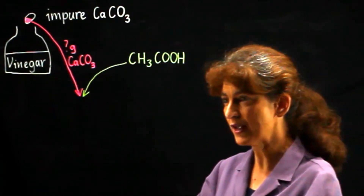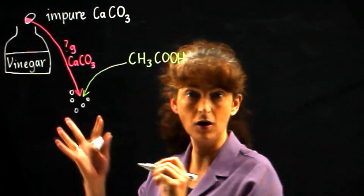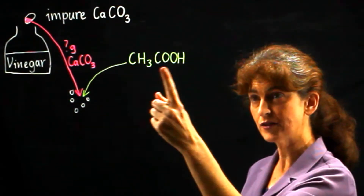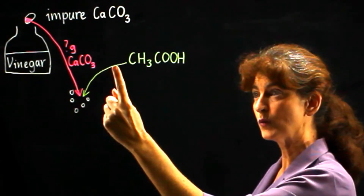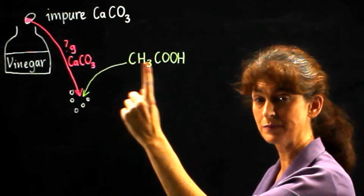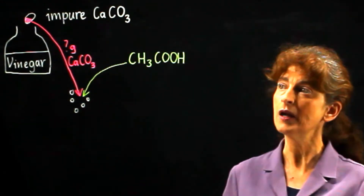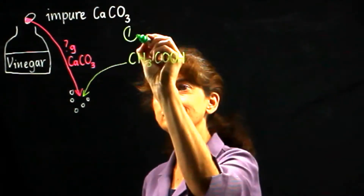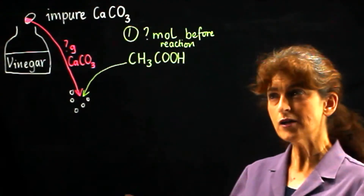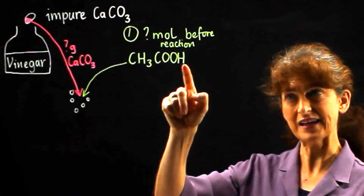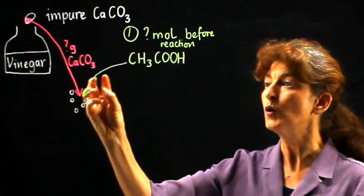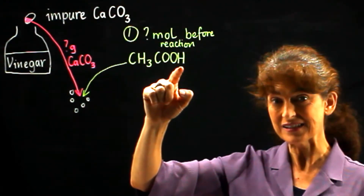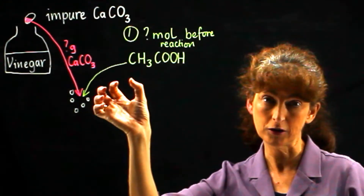So these two are going to react. We get bubbles, fizz — that's carbon dioxide coming up. If we can find out how many moles of ethanoic acid reacted, then we can work out what mass of calcium carbonate must have reacted with that. The first step is we need to know how much ethanoic acid we had in the beginning. How are we going to work out how many moles of ethanoic acid we had before this fizzing reaction? Well, we're told how much vinegar we have, and we're told that ethanoic acid makes up a certain fraction of that vinegar.